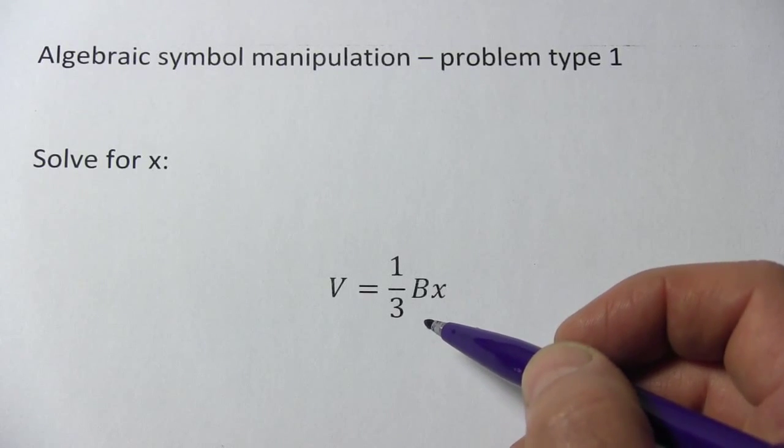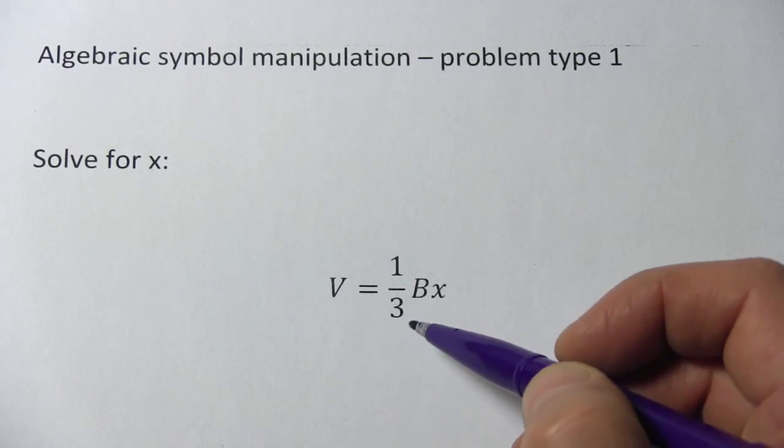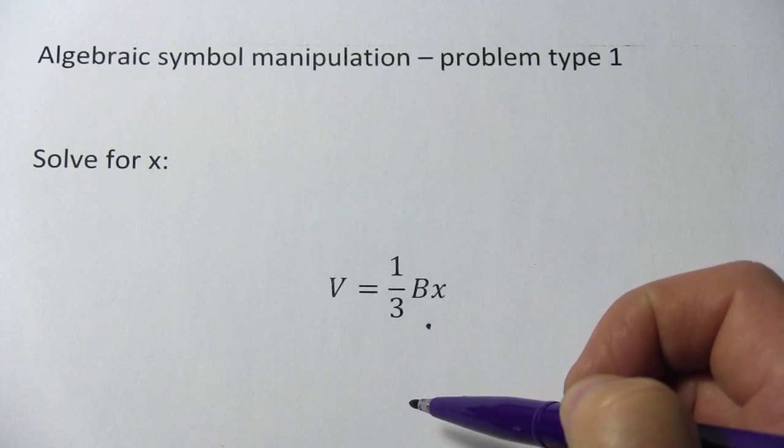Here's another equation that we need to solve for x, but it's got some other variables in it. There's a V and there's a B. So what do we do here?